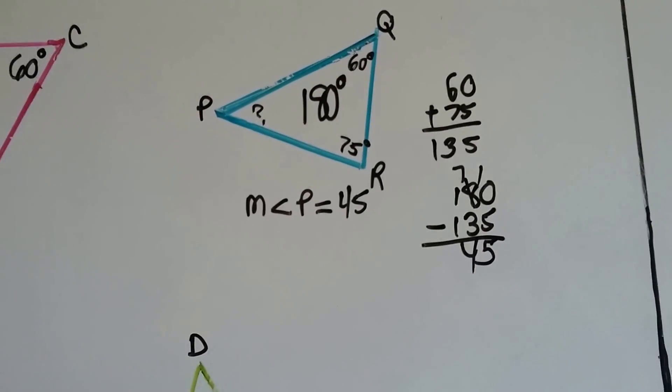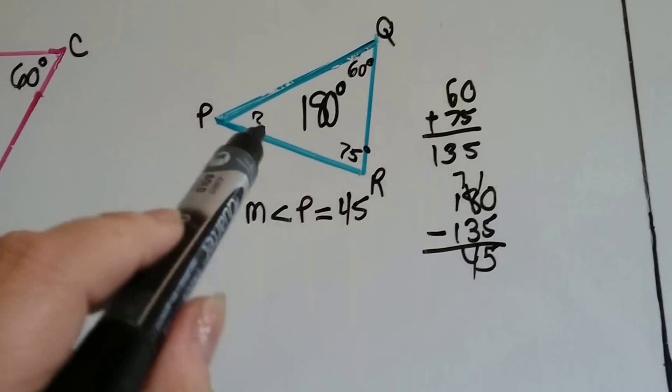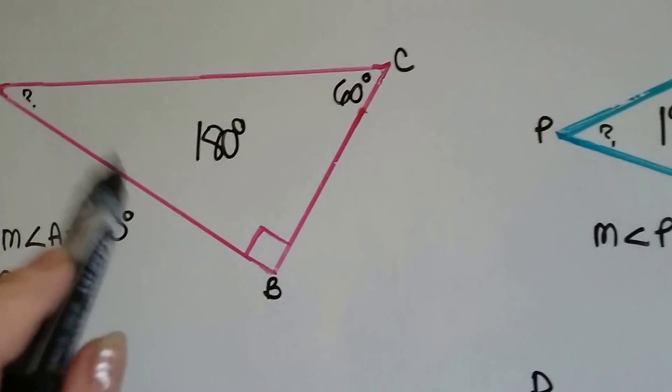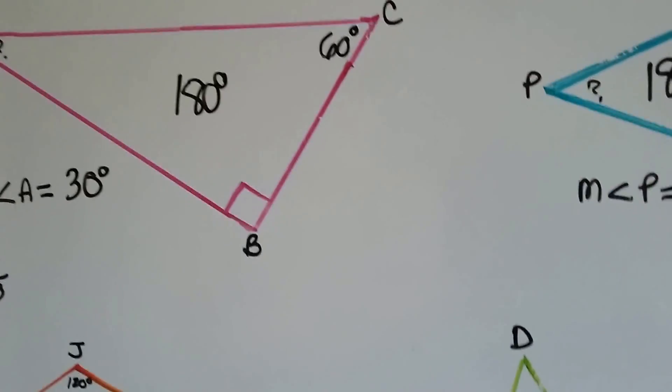We added these together and subtracted it from the 180 that all triangles are 180 inside. So that's easy, isn't it? And we can tell what type of triangle it is, too. This is a scalene because they're all different angles. That means all the sides are different. That's a right triangle because we know there's a 90 degree angle there.